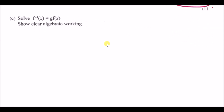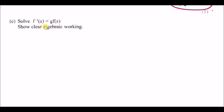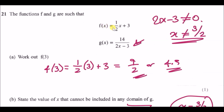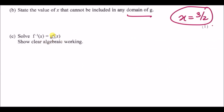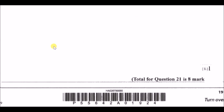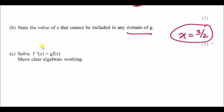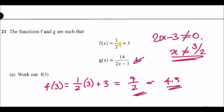Now part c — solve f⁻¹(x) = gf(x). The f⁻¹ is the inverse function of f. First, we need to work out what the inverse of f is. This is a six-mark question and will take a while, so first things first: let's calculate the inverse.